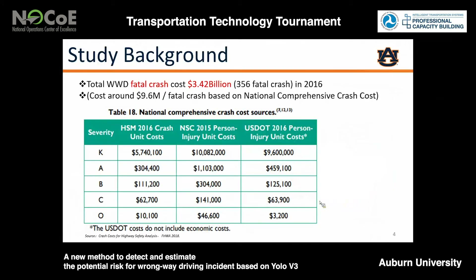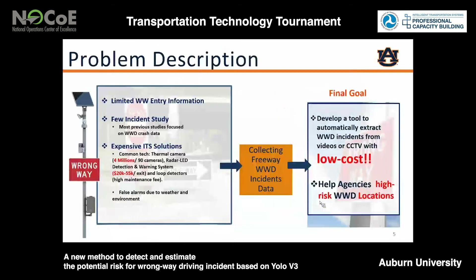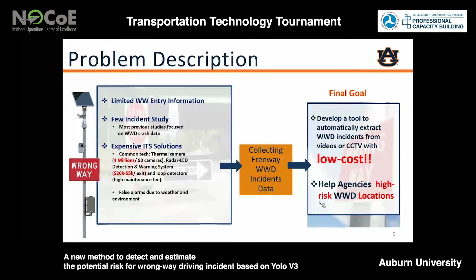This table shows the fatal crash cost is around $0.6 million per person in 2016, so only for wrong-way driving fatal crashes, the cost will be up to $3.4 billion in a year. Wrong-way driving initial entry point is very hard to get from crash trackers because most of the wrong-way drivers pass away immediately with no information left. So engineers have suffered from the lack of wrong-way driving entry information, and also very few researchers study wrong-way driving incidents data.